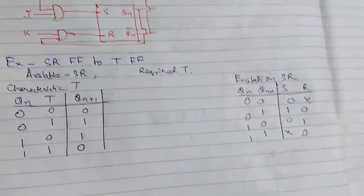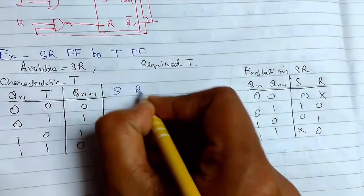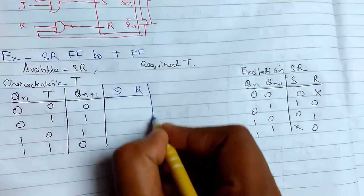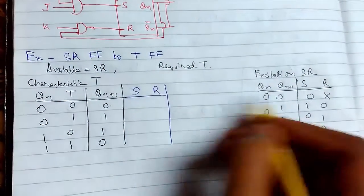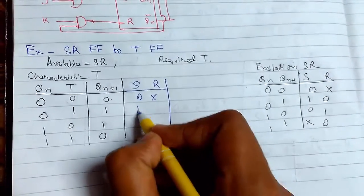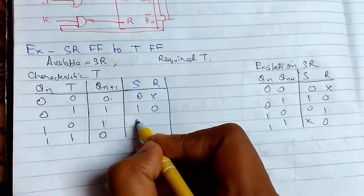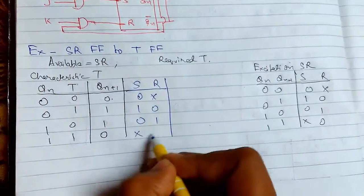Now we need to find the value of S and R here. For 00 it is 0 cross, for 01 this is 10, for 10 it is 01, and for 11 it is cross 0.